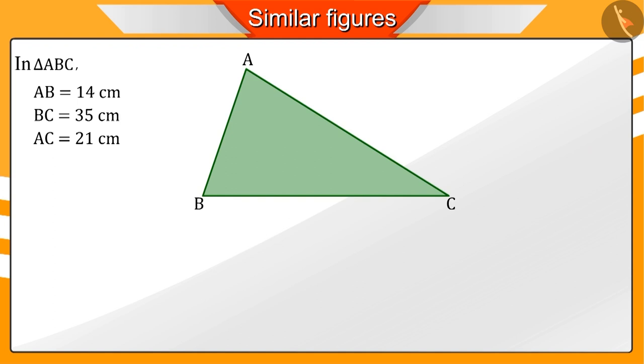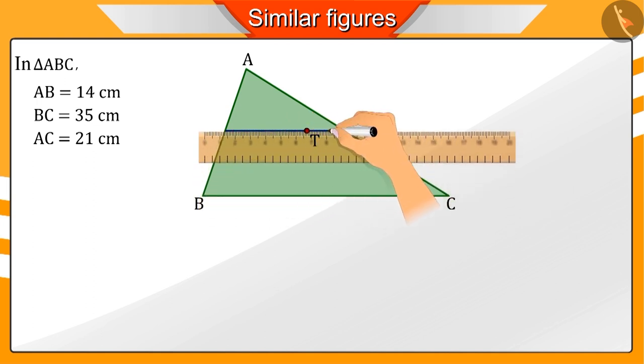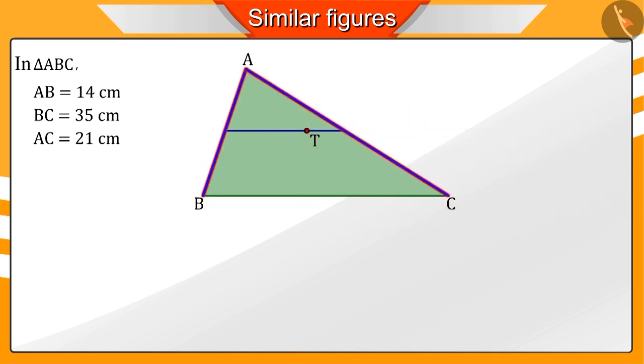Now, let's take a point T anywhere on the triangle and we draw a line parallel to line BC through the point T, which cuts the sides AB and AC at points M and N respectively.